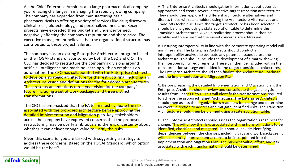Answer D continues: this should include identifying dependencies between changes including gaps and work packages, and identifying improvement actions to be incorporated into the implementation and migration plan. The business value, effort, and risk associated with each transformation should be determined. In this option you have all the pointers for risk — how risk will be identified, classified, mitigated, how dependencies will be addressed, and what the improvement actions are.